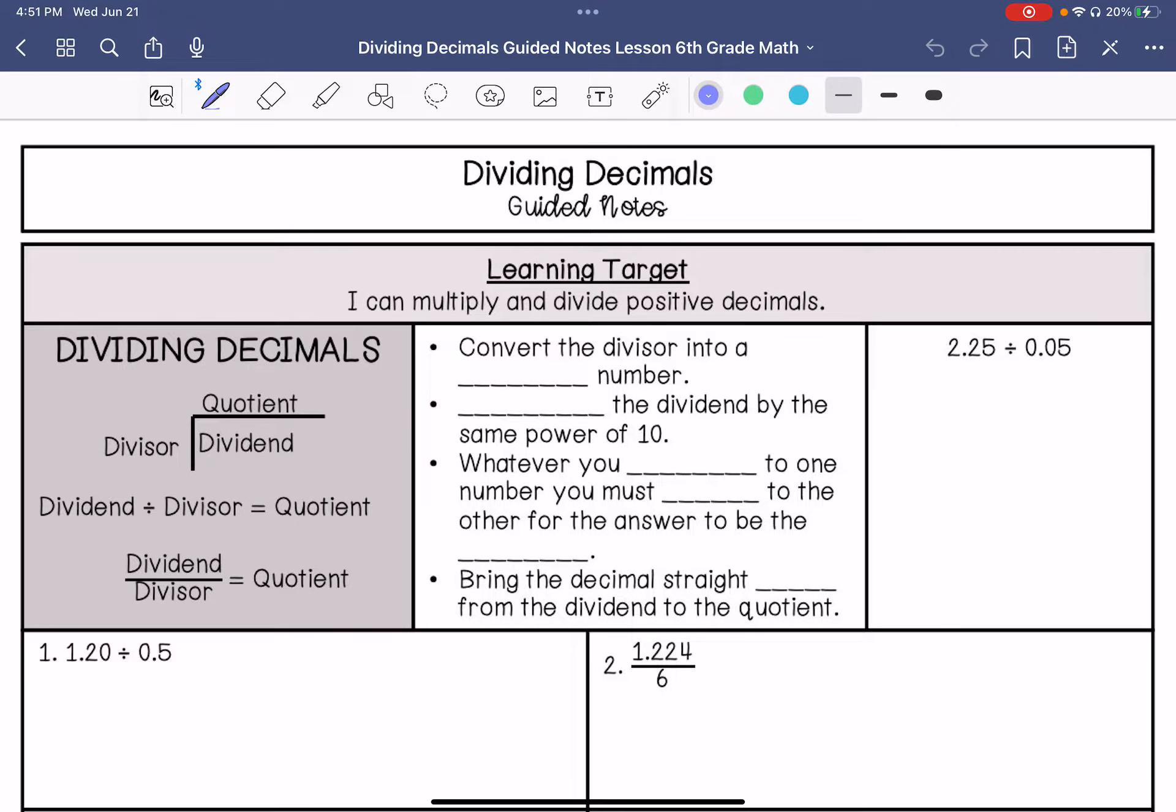So our steps to solve dividing decimals. You are going to convert the divisor into a whole number. So I'm going to rewrite this right here. I'm going to convert this to a whole number by moving the decimal. Then you are going to multiply the dividend by the same power of 10. Basically, whatever you do to one number, you must do to the other number for the answer to be the same. So if I move the decimal over twice on the divisor, I need to move it over twice in the dividend. So if I rewrote this, it would be 5 divided by 225.